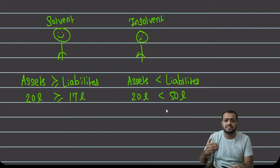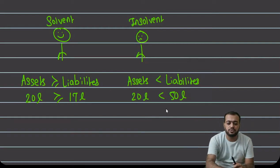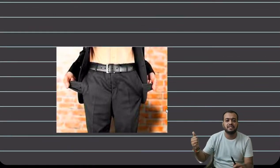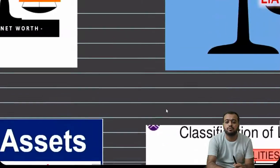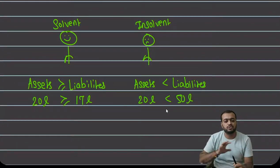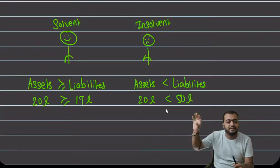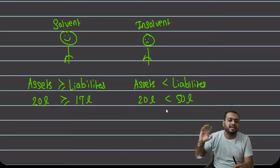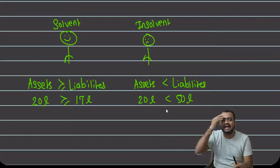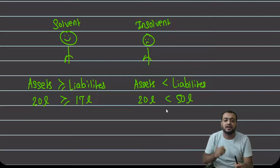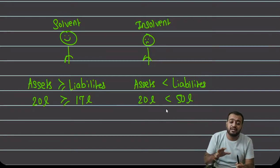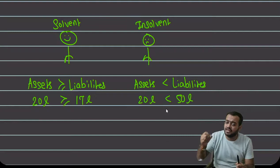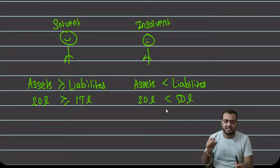अगर किसी person के पास जितने भी sources हैं, कोई भी source use करके पैसे आने की संभावना नहीं है — भई, दिवाला निकल चुका है, जेब में कुछ है नहीं, कोई recovery के chances नहीं हैं। अगर यह court को prove हो गया, court को दिख गया कि financially he is not a sound person, पूरी property बेच के भी पैसा नहीं मिल सकता — then court will declare him as Insolvent Person। आप किसी को यूं ही declare नहीं कर सकते — जिस दिन court declare करेगा, तभी उसे insolvent person treat किया जाएगा।